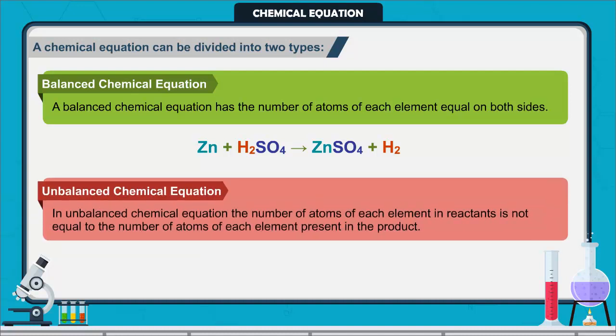Second one is unbalanced chemical equation. If the number of atoms of each element in reactants is not equal to the number of atoms of each element present in the product, then the chemical equation is called unbalanced chemical equation. For example, in this example, a number of atoms of elements are not equal on two sides of the reaction, so it is an unbalanced chemical equation.